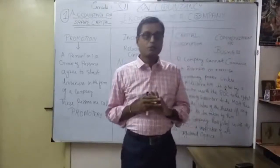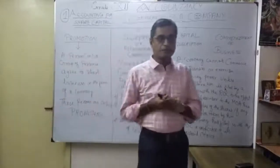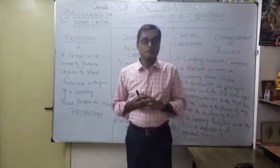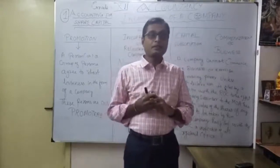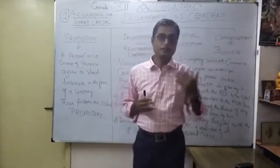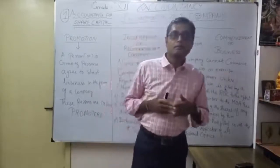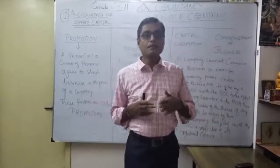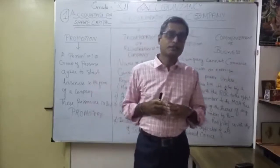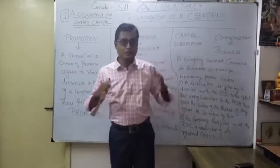Keep that in mind. We started the previous session with Chapter 1: Accounting for Share Capital. Before share capital, we covered what a company is, the features and characteristics of the company, different kinds of companies, and the differences between partnership and company — the benefits of each form of organization. We also discussed three types of companies: one-person company, private company, and public company, and all the differences among them.